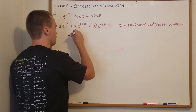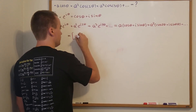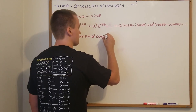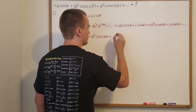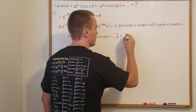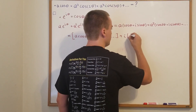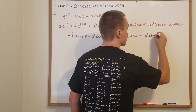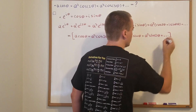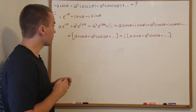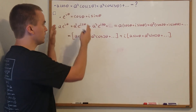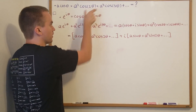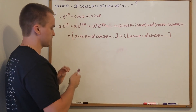For the real part we're going to have A·cos θ plus A²·cos 2θ and so on. For the imaginary part we're going to have A·sin θ plus A²·sin 2θ and so on. We can see that from one side this series contains our original series that we want to find. Now let's take a look at this series from the other side.